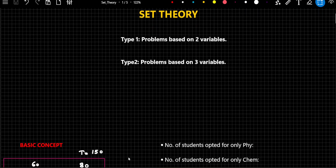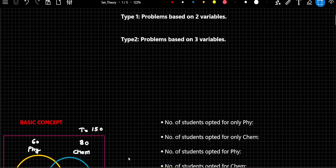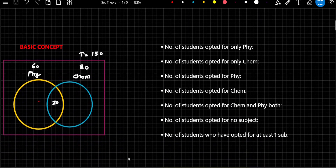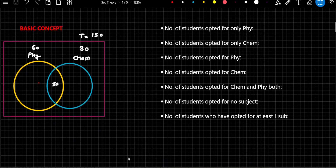Before I begin with questions, there are some fundamental things we have to understand, and for that I have picked an example. Using this example, we will try to understand the basic concept. Here you would see there are two sets — the first set represents the number of students who have opted for Physics and the other represents students who have opted for Chemistry. The number 60 represents students who opted for Physics, 80 are students who opted for Chemistry, and 20 is in the intersection region — those students who have opted for both Physics and Chemistry.